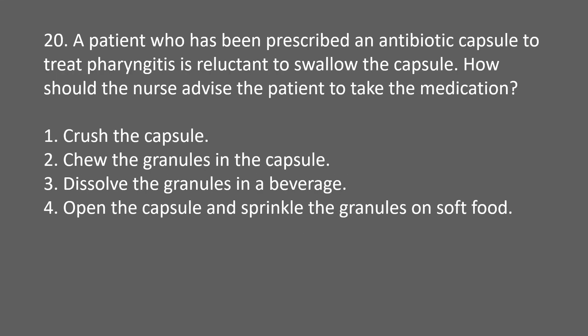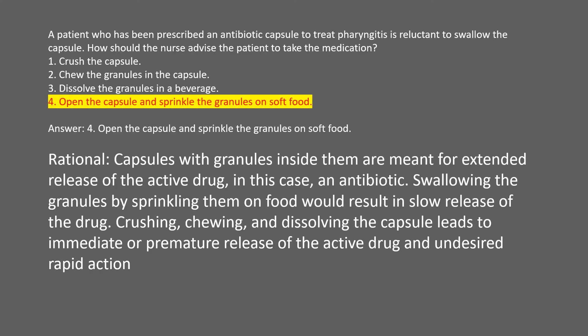A patient prescribed an antibiotic capsule to treat pharyngitis is reluctant to swallow the capsule. How should the nurse advise the patient? 1. Crush the capsule. 2. Chew the granules. 3. Dissolve the granules in a beverage. 4. Open the capsule and sprinkle the granules on soft food. Answer: 4. Rational: capsules with granules are meant for extended release of the active drug. Sprinkling on food allows slow release; crushing, chewing, or dissolving leads to premature release of the active drug.